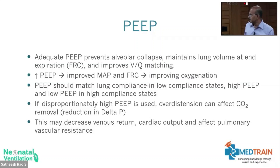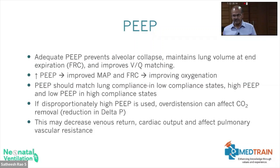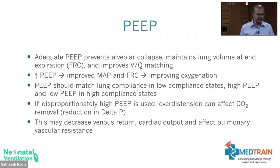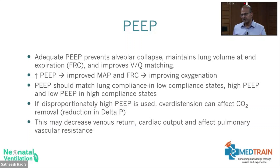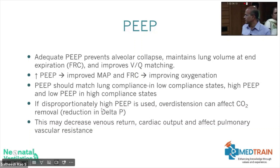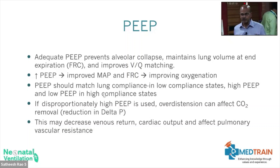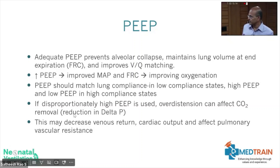PEEP prevents alveolar collapse and maintains lung volume at end-expiration. Newer ventilators — especially in the PICU setting — can calculate the required PEEP using lung elasticity and other parameters, but in newborns we don't use that routinely. We generally start with a PEEP of 5 to 6. PEEP below 5 is not ideal; in conditions like pulmonary hemorrhage or PDA with pulmonary edema you may use a PEEP of 7, but monitor for over-distension. PEEP should match lung compliance: high PEEP in low-compliance states, lower PEEP in high-compliance states.